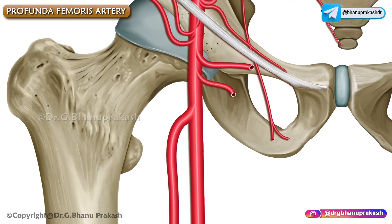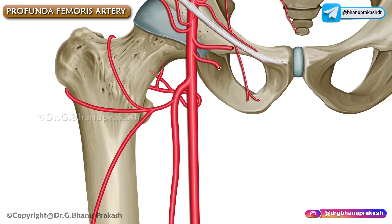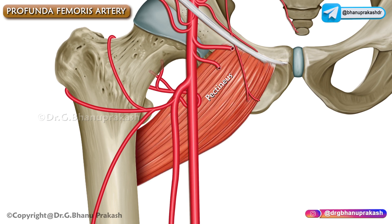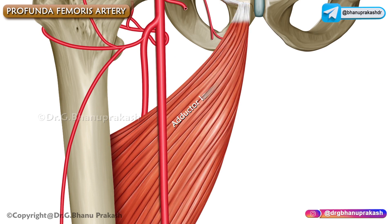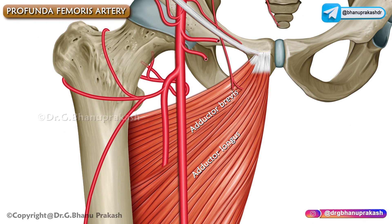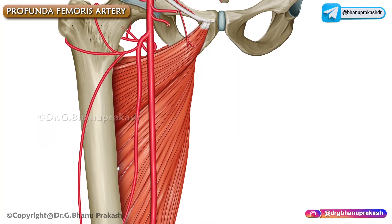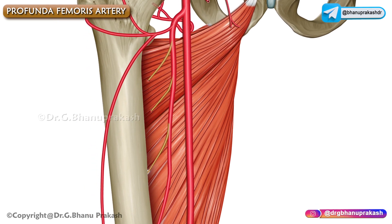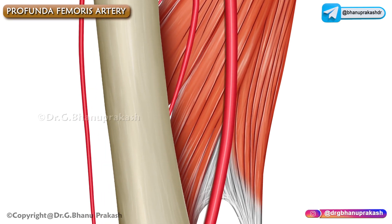It arises behind the femoral vessels, giving off medial as well as lateral circumflex arteries. After arising from the femoral artery, it passes posteriorly to the sartorius as well as adductor longus and descends close to the femur, successively between adductor longus and adductor brevis, and between adductor longus and adductor magnus, where it gives off the first three perforating arteries. Its terminal part pierces the adductor magnus as the fourth perforating artery to reach the back of the thigh.